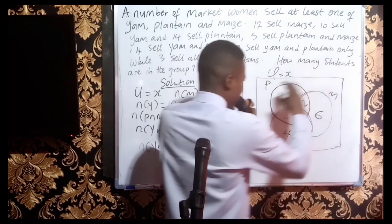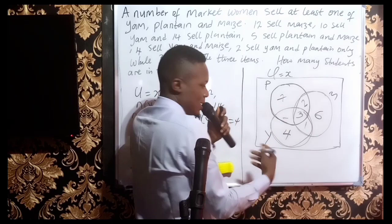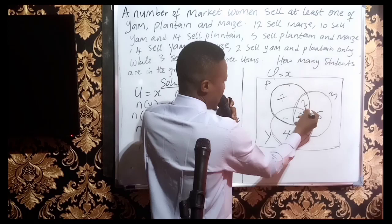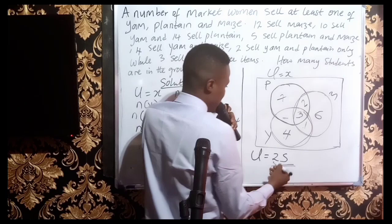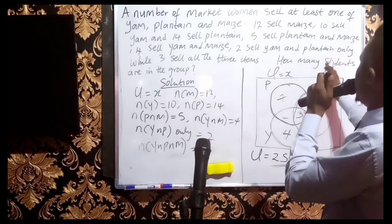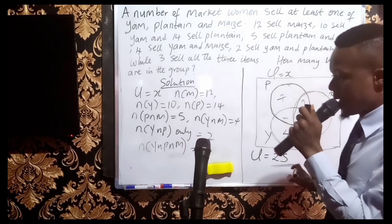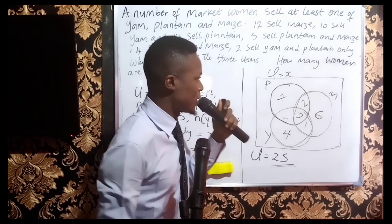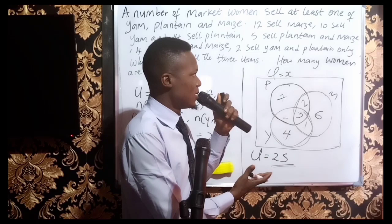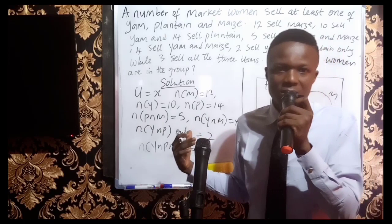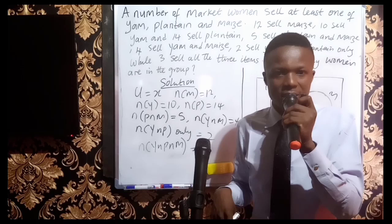The total number of women in the group is the sum of everything in the Venn diagram: 7 plus 2 plus 3 plus 2 plus 6 plus 1 plus 4 equals 25. Therefore, the number of women in the group is 25. This shows how careful application of the Venn diagram helps us solve real-life problems. John Venn did a wonderful thing by inventing this.